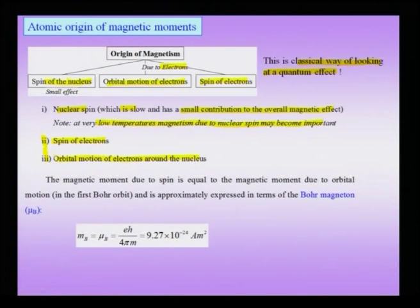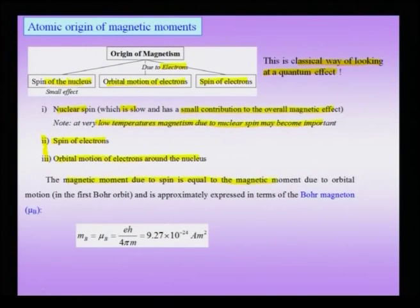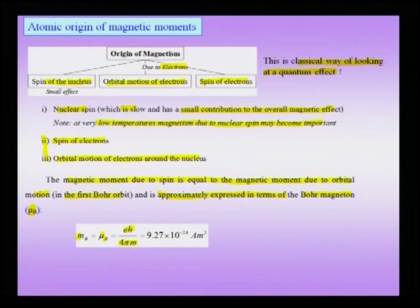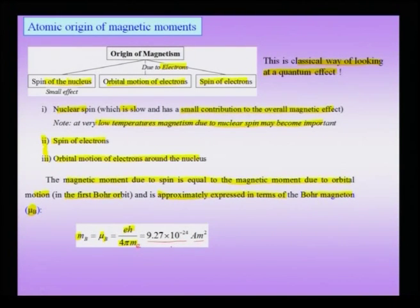In these lectures we focus on magnetization from electron spin and orbital motion of electrons around the nucleus, noting these are quantum mechanical in origin. The magnetic moment due to orbital motion in the first Bohr orbit is expressed in terms of the Bohr magneton mu_B, given by eħ/(4πm), where m is the mass of the electron, and has a value of about 9.27 × 10⁻²⁴ ampere meter squared.